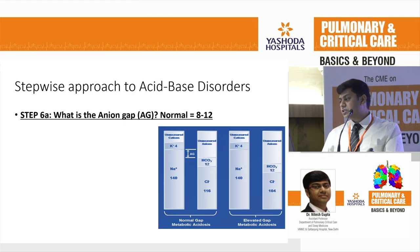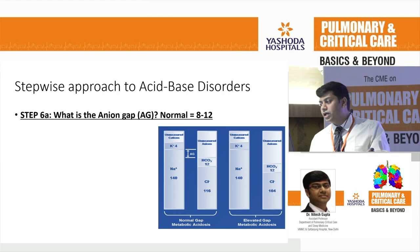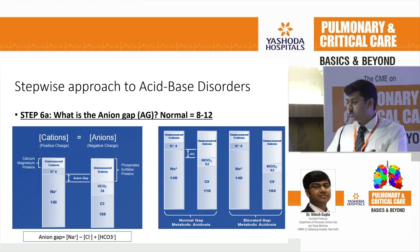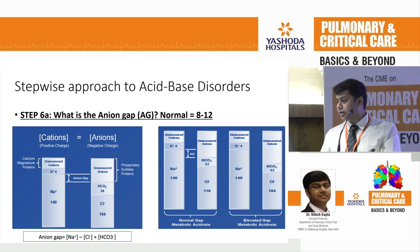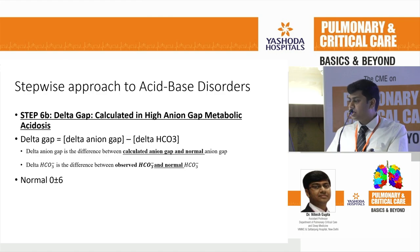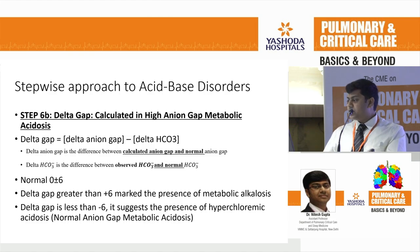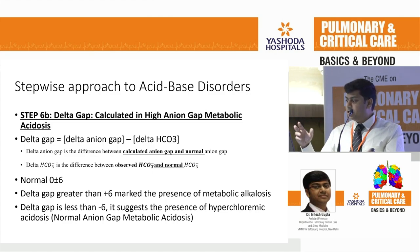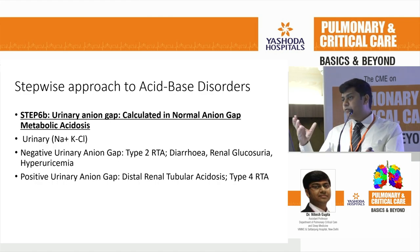After evaluating pH, determining the direction of the primary disorder, identifying secondary disorder, and evaluating compensation as adequate or inadequate, we move to step 6: the anion gap. The normal range of anion gap is 8 to 12. It is calculated as sodium minus the sum of chloride plus bicarbonate. There are two types: normal anion gap and high anion gap disorders. If there is a high anion gap, you calculate the delta gap — change in anion gap minus change in bicarbonate, normal within plus or minus 6. Delta gap more than 6 means there is a second disorder: additional metabolic alkalosis alongside high anion gap metabolic acidosis. If less than minus 6, the patient has both high anion gap and normal anion gap metabolic acidosis.